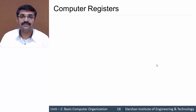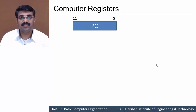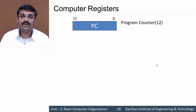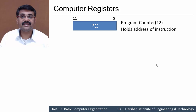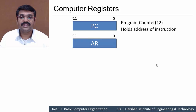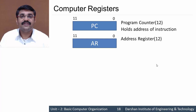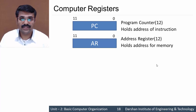The first register in our list is PC — Program Counter. Program Counter is of size 12 bits, which holds the address of the next instruction to be executed. Next we have the Address Register AR, which is also of size 12 bits. The Address Register holds the address of the memory, meaning it points to the memory.